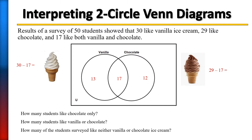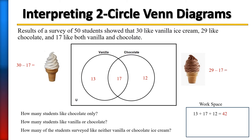Lastly, we want to find the students who don't like either. Add up all the students who like vanilla or chocolate: 13 plus 17 plus 12 gives us 42. We don't have all our students — there were 50 total. So we take 50 minus 42, which gives us 8 students. They're not in vanilla and not in chocolate, so they're somewhere in the universal set — these are the students who don't prefer either one.